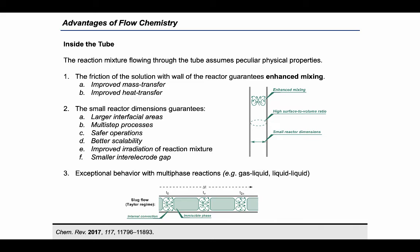When a flow reactor is employed, the reaction mixture inside the tube gains some peculiar physical properties. Specifically, the friction of the solution with the tube walls guarantees enhanced mixing, resulting in improved mass and heat transfer. Furthermore, the small dimensions of the reactor create an environment where the transformation is operationally safer and easier to scale up than the corresponding batch reaction.